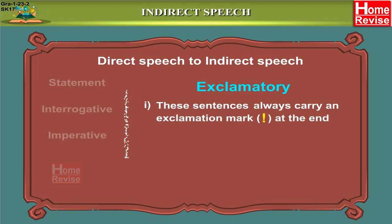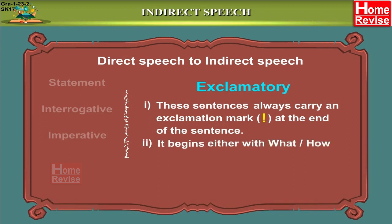The fourth kind of sentence is an exclamatory sentence. An exclamatory sentence always carries an exclamation mark at the end, and it begins either with 'what' or 'how'. For example, 'What a scene!' and 'How kind you are!' — these are exclamatory sentences.